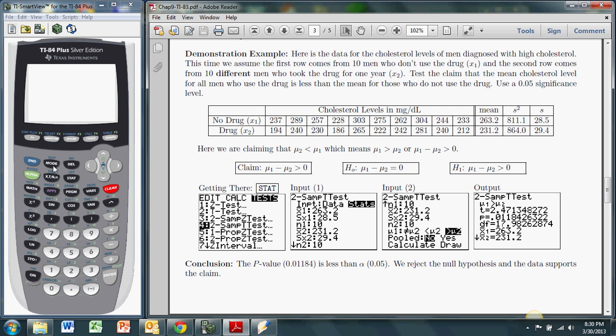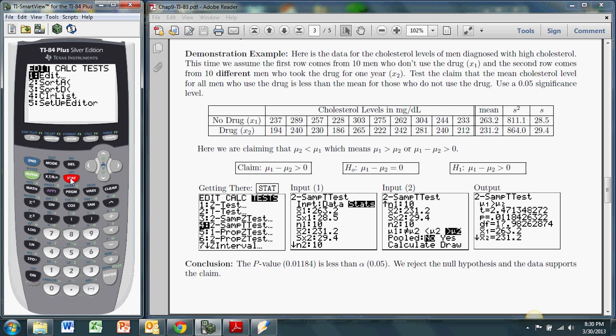We hit stat, so we're going to go over to tests. This is a two sample t-test because it's about means. So I hit enter. And I'll start with stats. I'll show you how to use data in the second half of this video. So I hit enter on stats. It's asking me for the mean from the first sample, which is 263.2.